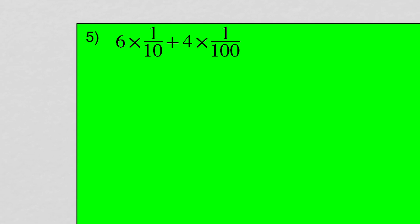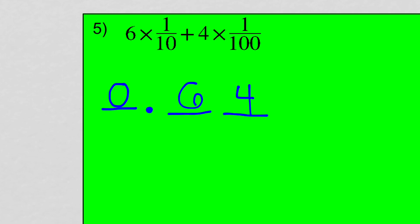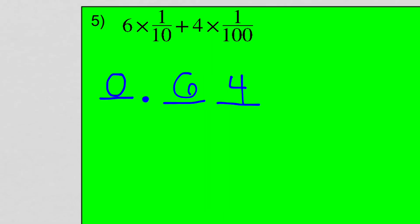Now we have a number written in expanded form. We have the tenths and the hundredths. Same idea every time — I'll write a space for my ones, decimal, space for my tenths, space for my hundredths. I have zero wholes. It says I have six tenths, so six in the tenths. And it says I have four groups of one hundredth, so four in the hundredths. There's my number in standard form. I would say that is sixty-four, and the place value of the last digit is the hundredths, so sixty-four hundredths.